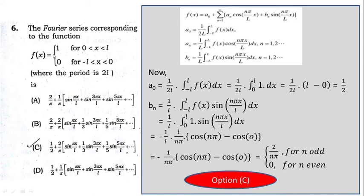Since f(x) = 1 is an even function, the aₙ terms vanish (aₙ = 0 for all n ≥ 1). Therefore option C is correct.